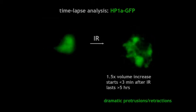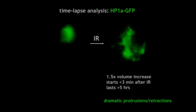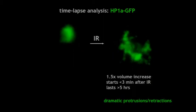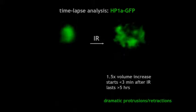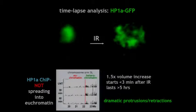After you irradiate, this domain just enlarges dramatically — a 1.5-fold volume increase. It starts very quickly, within three minutes of irradiation, and lasts about five hours. You have all these dynamic protrusions. The key observation is that you see this dynamic expansion of 1.5-fold over the normal volume.